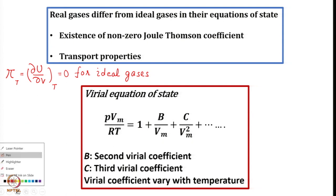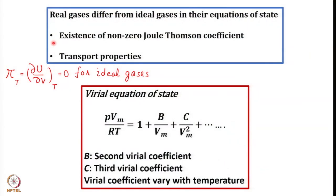If we address the difference between real gases and ideal gases, there can be several points of difference. φ_T = 0 for ideal gas; φ_T ≠ 0 for non-ideal gas. This is because gas molecules, when non-ideal, interact with each other, so interaction energy contributes to non-ideality. There is also existence of non-zero Joule-Thomson coefficient and differences in transport properties. So, how to address the deviation from ideality in gases?